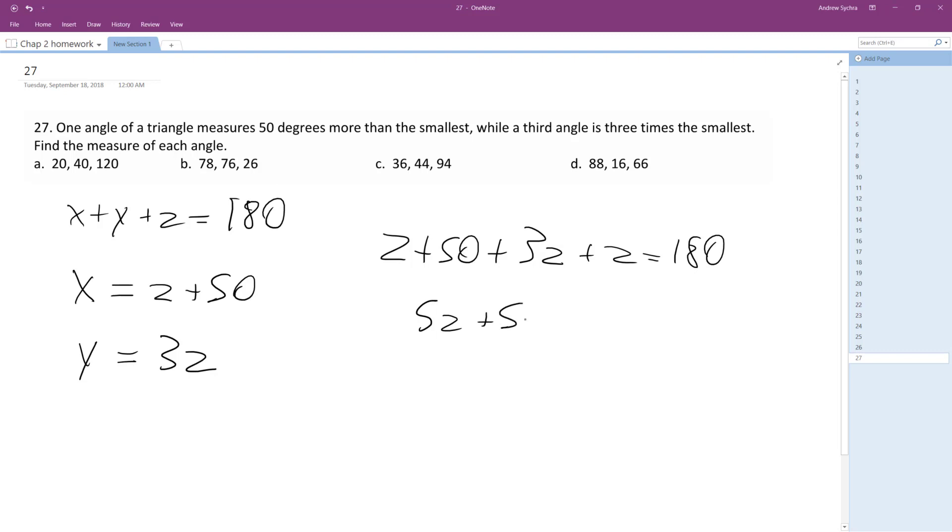5Z plus 50 equals 180, minus 50, minus 50, 5Z is equal to 130.